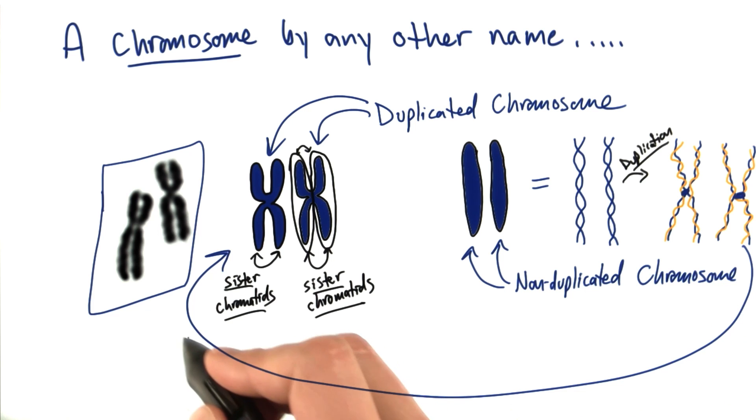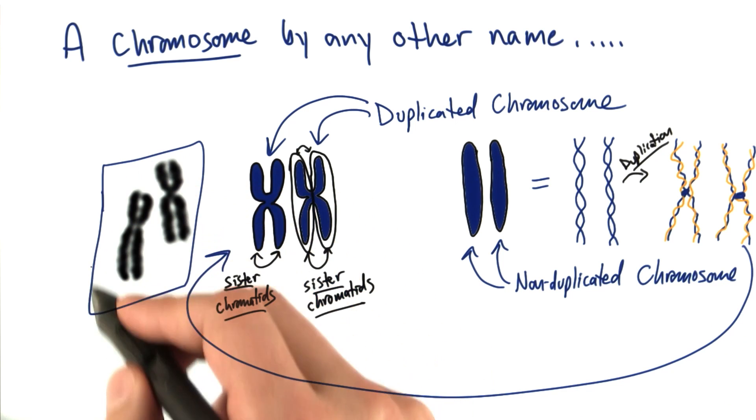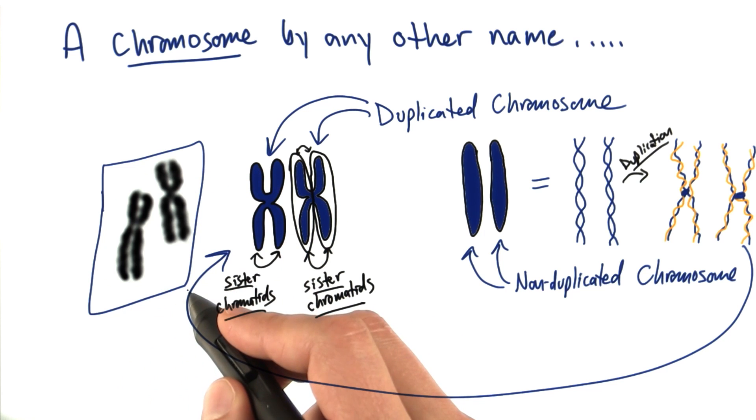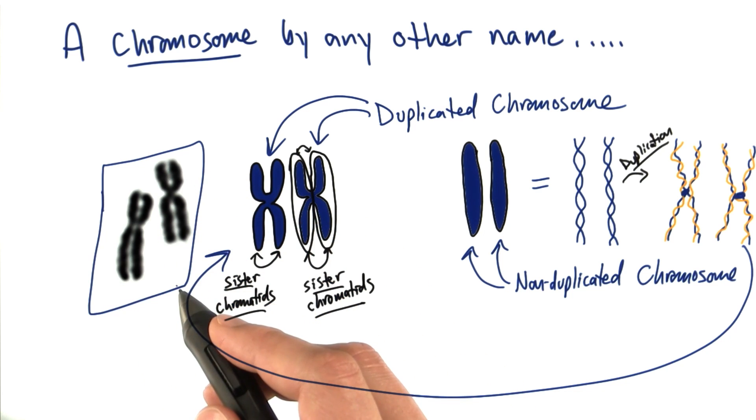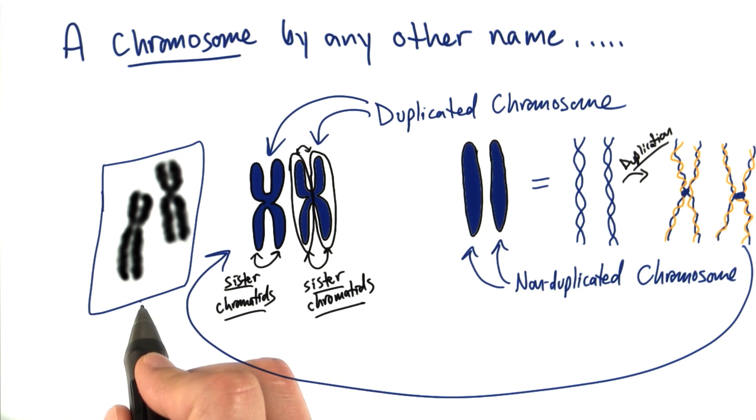But when a cell divides, it has to organize and get everything together and choreograph to separate. And so it condenses into these beautiful organized structures that make it easy for us to see. So a scientist will wait until a cell gets to this point, and then opens the cell up to see the chromosome.